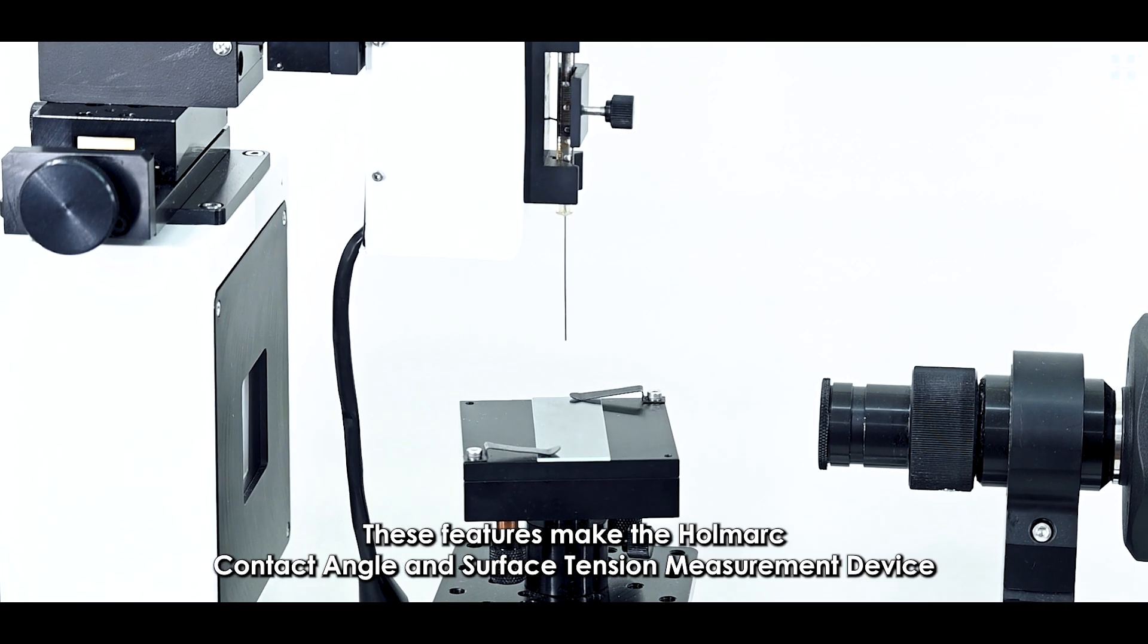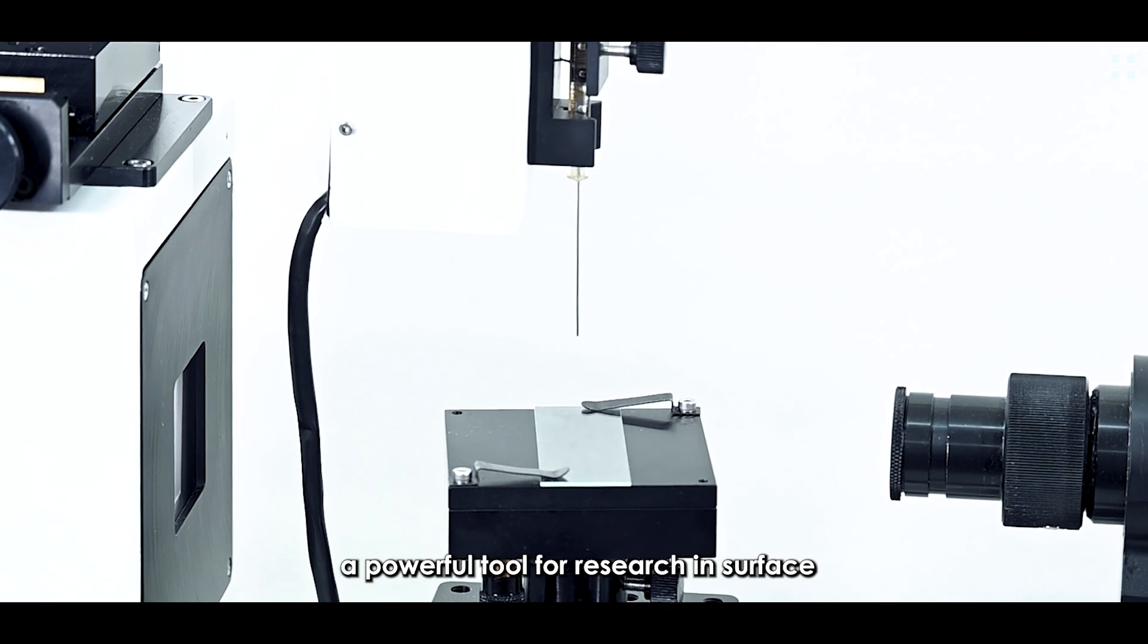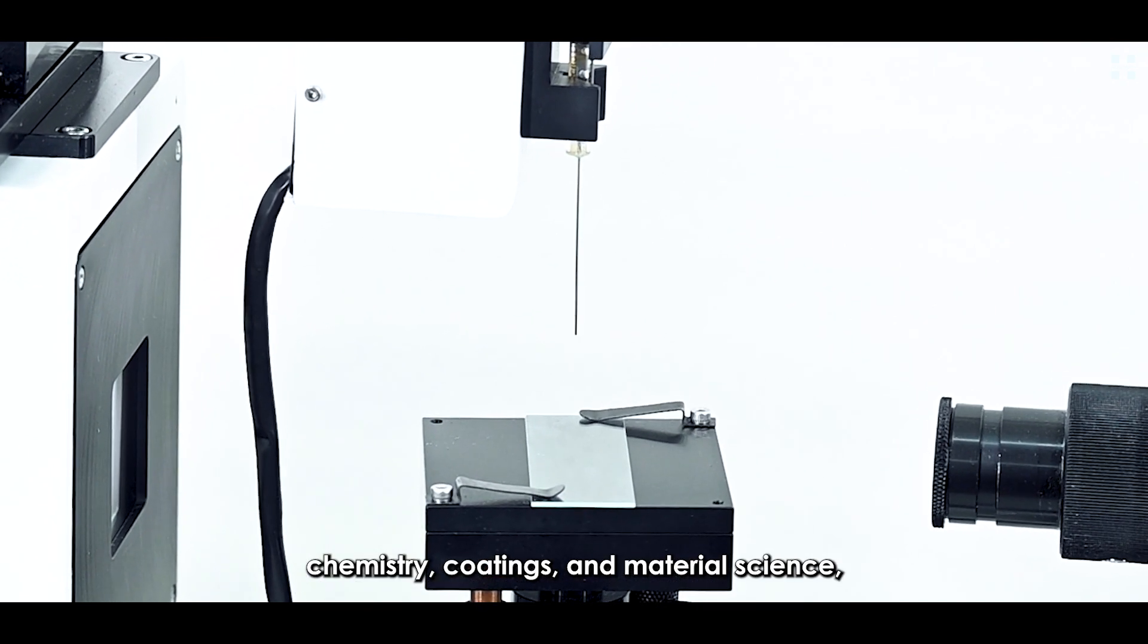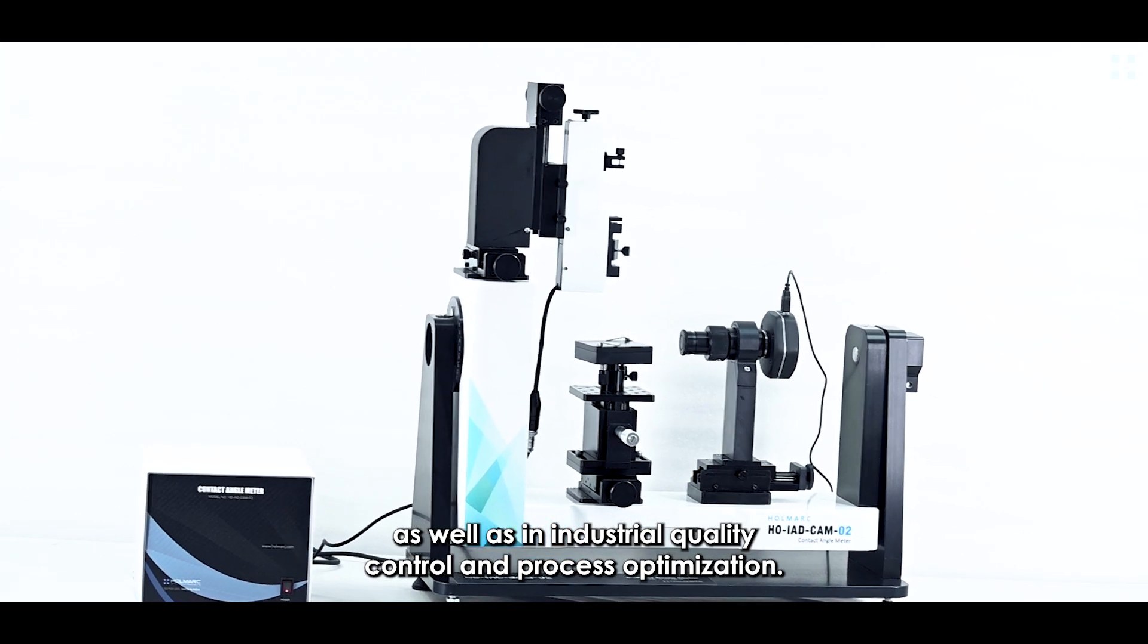These features make Holmark's contact angle and surface tension measurement device a powerful tool for studying surface chemistry, coatings, and material science, as well as for industrial quality control and process optimization.